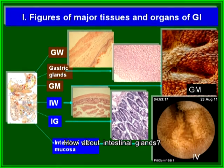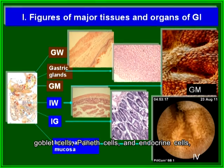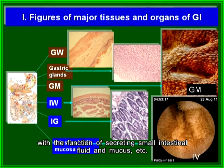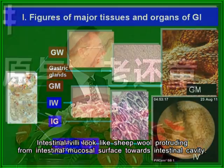The intestinal glands are composed of absorptive cells, goblet cells, paneth cells, and endocrine cells, with the function of secreting small intestinal fluids and mucus. Intestinal villi look like sheep wool protruding from the intestinal mucosa surface towards the intestinal cavities.